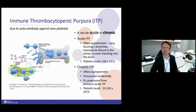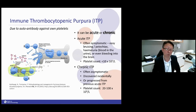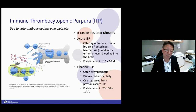One of the conditions is ITP — immune thrombocytopenic purpura. It is an autoimmune condition where our body becomes confused, producing antibodies that attack our own platelets. The antibody binds to the platelets, and these platelet-coated antibodies pass through the spleen, which eats them up, causing the platelet count to drop.